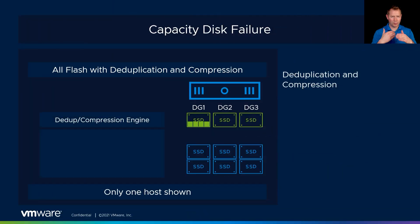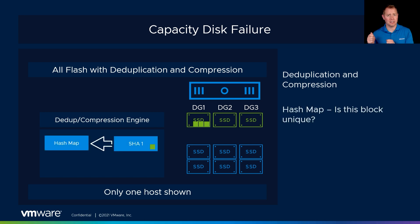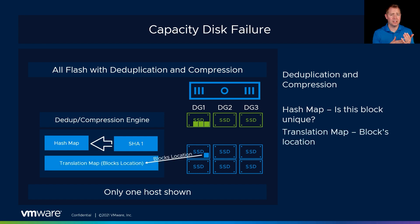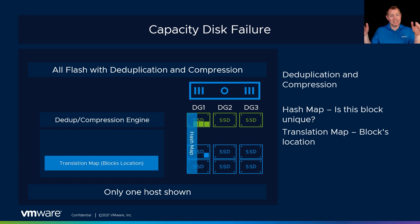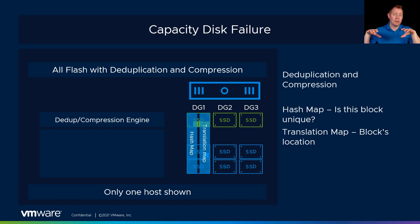There's one configuration I didn't mention: all-flash with deduplication and compression. This is one of our space-savings configurations, but there's a caveat. For every block of data that comes into the capacity tier, we calculate a SHA-1 hash against it, save it into a hash map, and then record the block's location into a translation map. Since that map is spread across all of the capacity disks in that specific disk group, if we were to lose one capacity disk, we'd lose part of the map — and as a result, we fail the entire disk group.